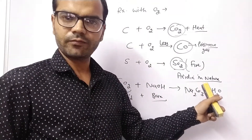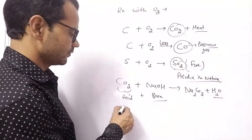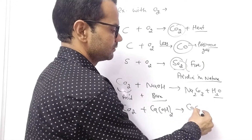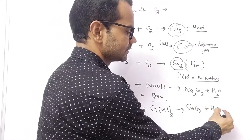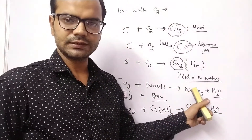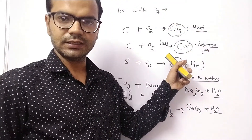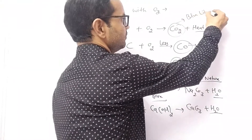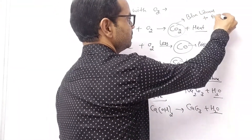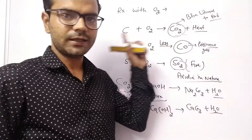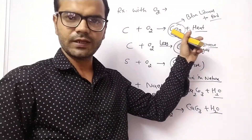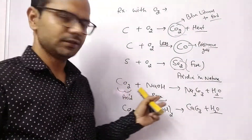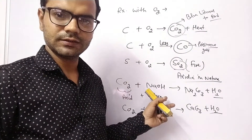Sodium carbonate is formed plus water is formed. This is again a type of salt formation: acid plus base gives salt and water. If we pass CO2 through calcium hydroxide, calcium carbonate is formed plus water is released. Non-metal oxides are acidic in nature — they will turn blue litmus red. Metal oxides are basic, but non-metal oxides are acidic.